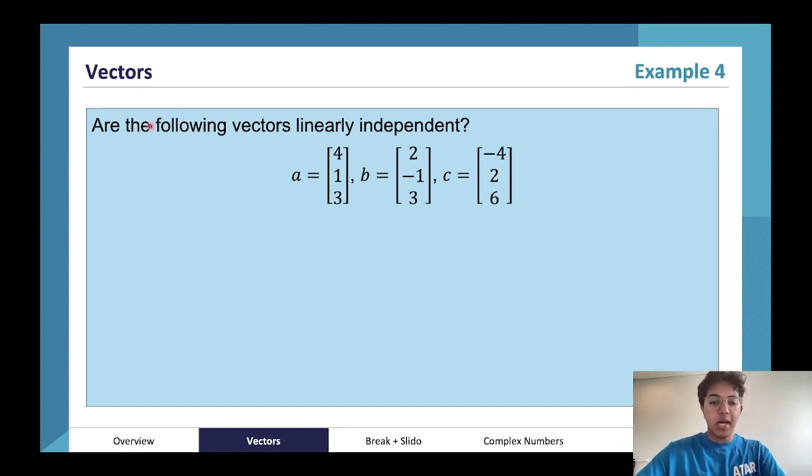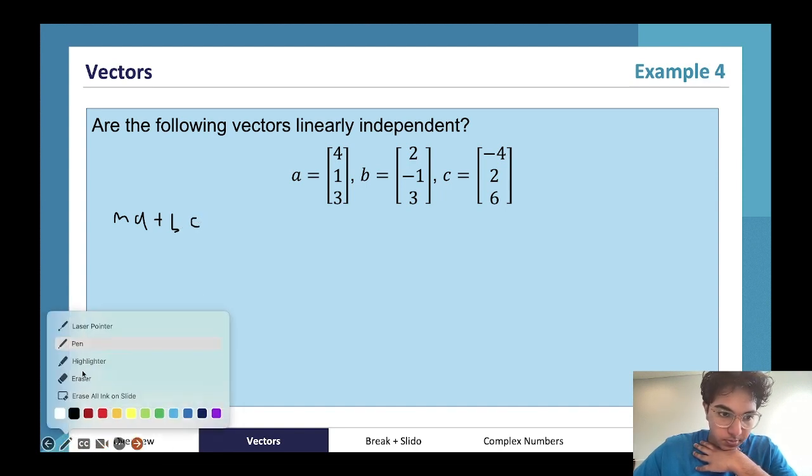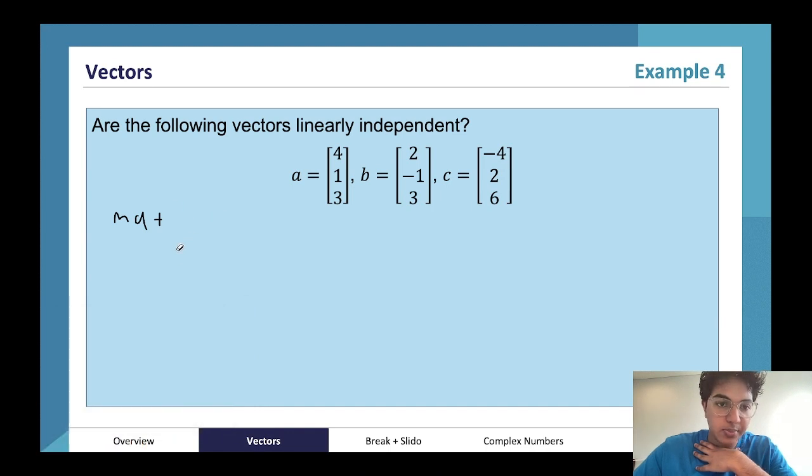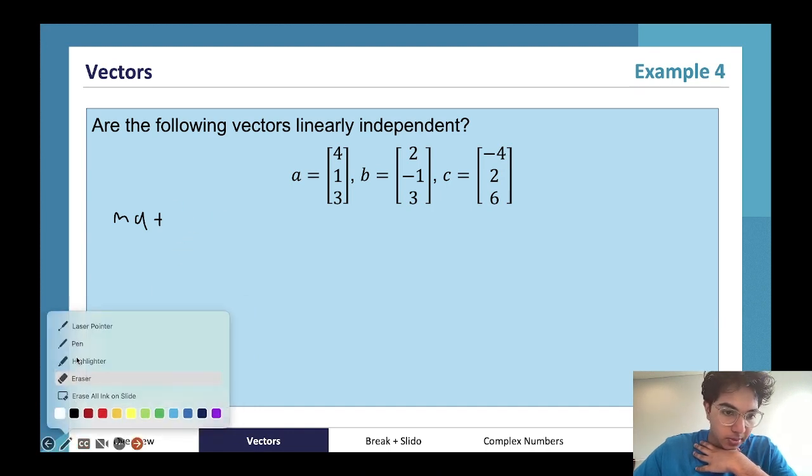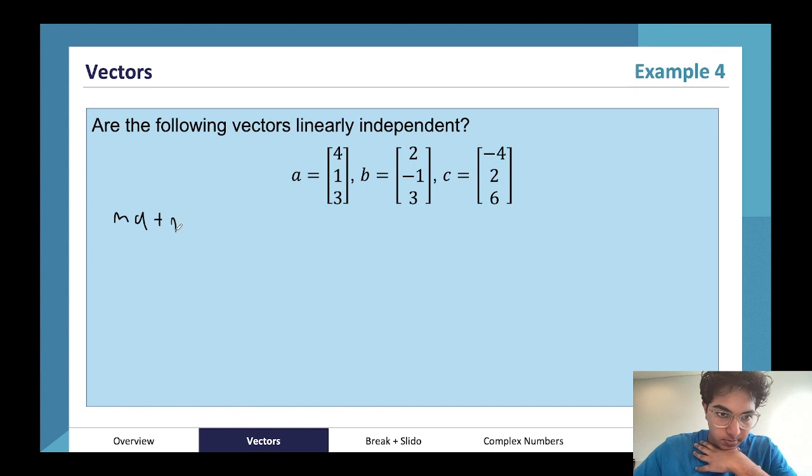I believe that was enough time there. So let's start walking through this. We want to find out if there exists ma plus nb equals pc. I'll just keep the same conventions as before.